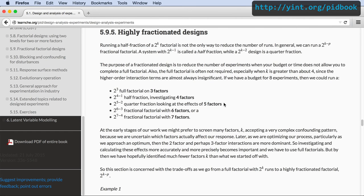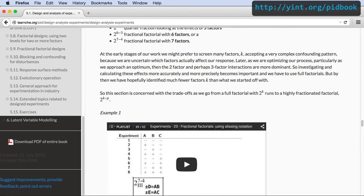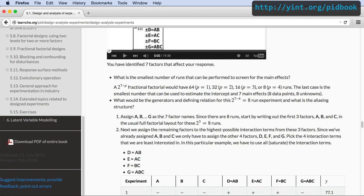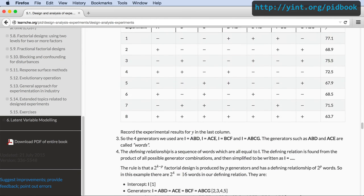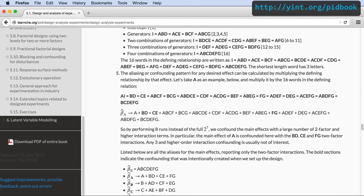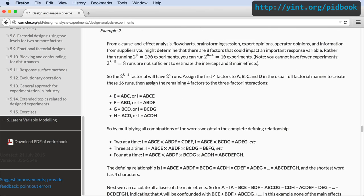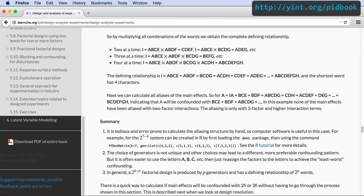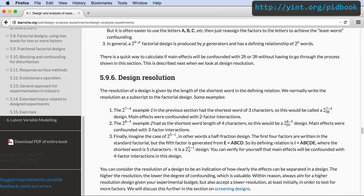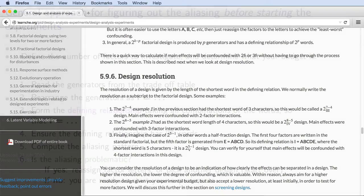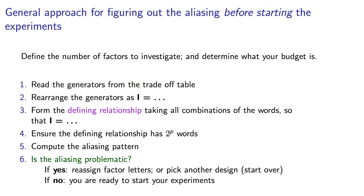In the course textbook, we show two examples, one with seven factors, and another with eight factors. Go through those examples, and really see how fractional factorials are used. All the details on calculating the generators and the defining relationships are given in those examples. You can use this quick sequence of steps as a general approach.